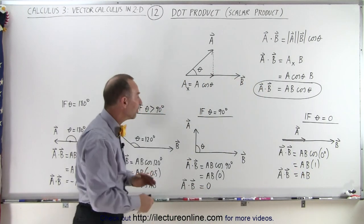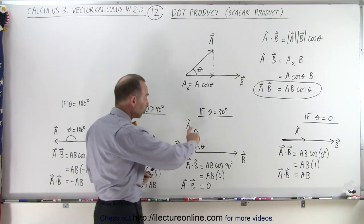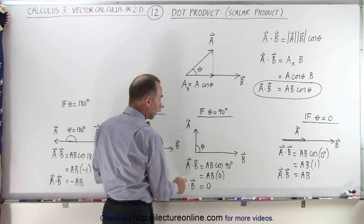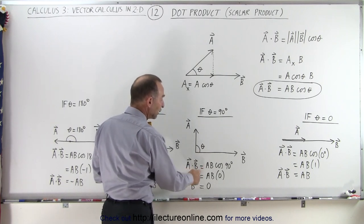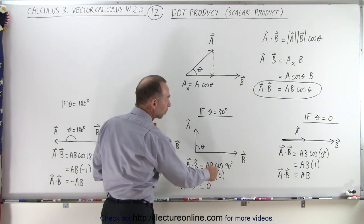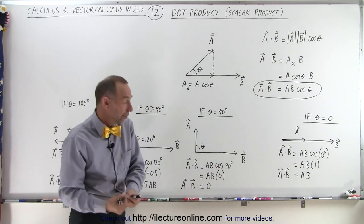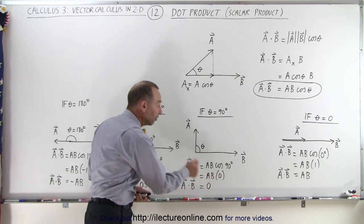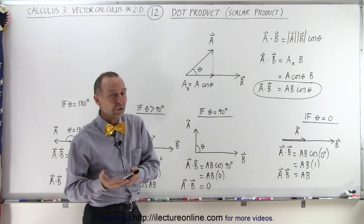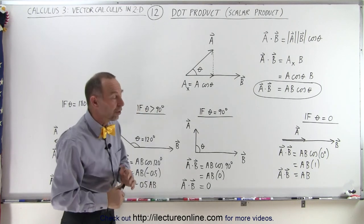But what if the angle is 90 degrees and we want the dot product? The projection of a onto b gives you zero length, so a·b equals the magnitude of a times the magnitude of b times the cosine of 90 degrees. The cosine of 90 is zero, and zero times anything simply gives you zero, so the dot product when the angle is 90 degrees is indeed zero.